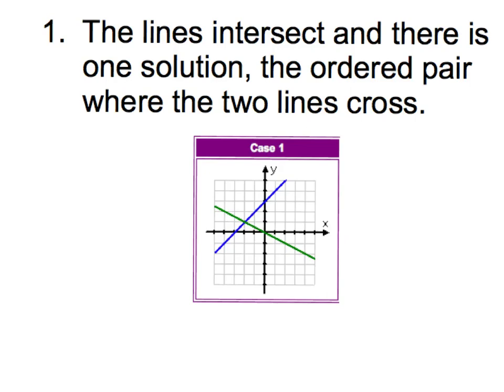The first thing that can happen — and this is what's been happening as we've been solving systems so far — is that the lines intersect, and there is one solution. Our solution is the ordered pair where the two lines cross each other. This is exactly what's been happening as we've worked on them so far.